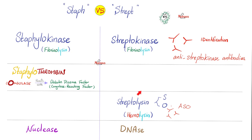Streptococcus pyogenes has streptolysin S and streptolysin O. Your body will make antibodies against streptolysin O, called anti-streptolysin O or ASO antibodies, which help us identify the bacteria. Moreover, streptococci have DNase, and your body will make anti-DNase antibodies, especially against DNase B.